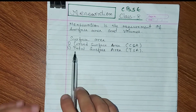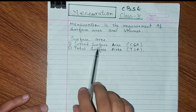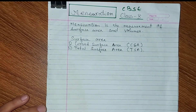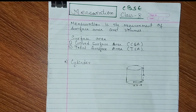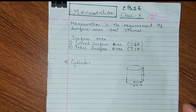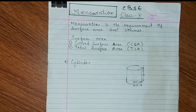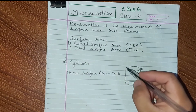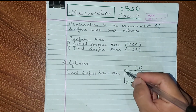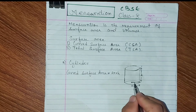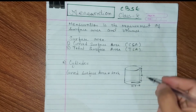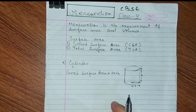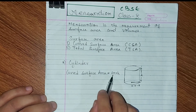First, cylinder surface area. So cylinder — its surface area and volume formula. The cylinder has base radius and height. Look at the curved surface area: 2πrh.